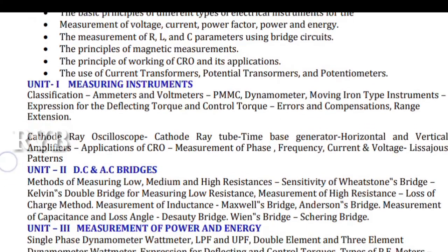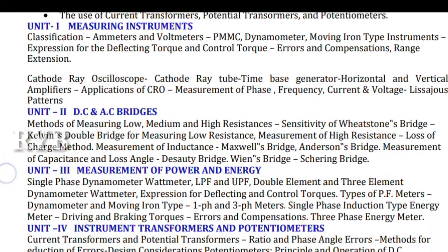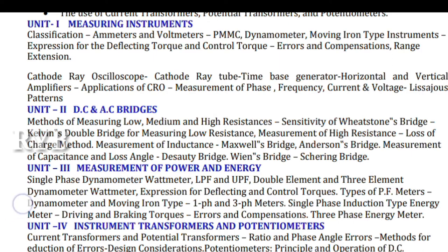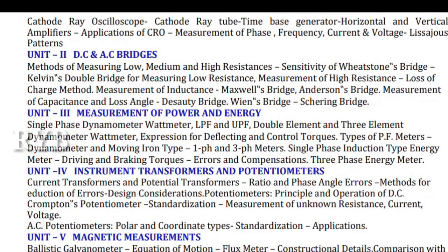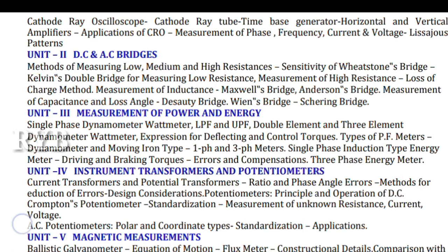Unit 1 covers meters and how they work: ammeter, voltmeter, PMMC, moving iron, and many types used in the laboratory. All this will be discussed in Unit 1. Unit 2 covers DC and AC bridges — how to measure inductance, capacitance, and Q factor. Different types of bridges will be studied in Unit 2.